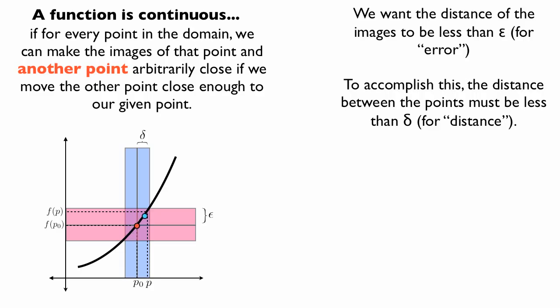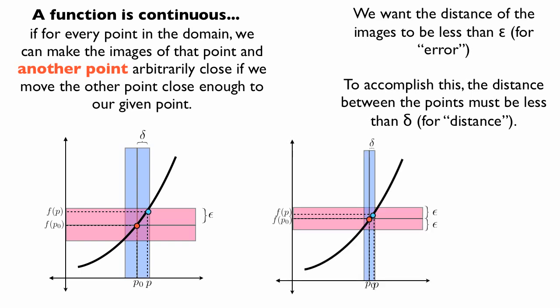As we finish this animation, we can view this other instance. In this case, we pick a smaller epsilon — in other words, we're trying to minimize the distance between the images even more. We can also find another delta that works in this particular situation; the delta is going to be smaller. But we know that as long as the distance between p and p0 is less than delta, the distance between the images f of p and f of p0 is going to be less than epsilon.